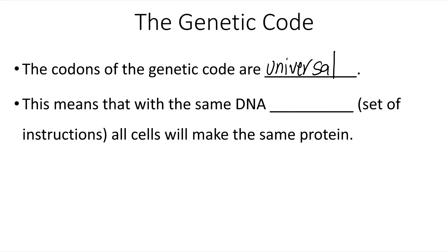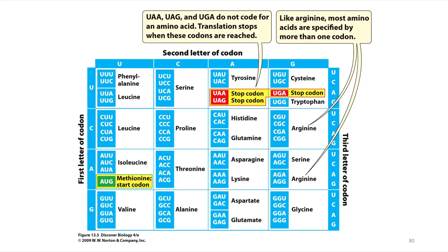With the same DNA sequence — a set of instructions — all cells will make the same protein. Here we can see a look at the genetic code table. You are not expected to memorize this, but it's important to understand how it's organized. For any three letters of RNA, let's pick C-A-U: the first letter C means we look in the second row, A as the second letter means we're on the third column, and U as the last letter means we're at the top of the box. We see that the codon C-A-U codes for the amino acid histidine. So histidine is coded for every time C-A-U is found in an mRNA message.